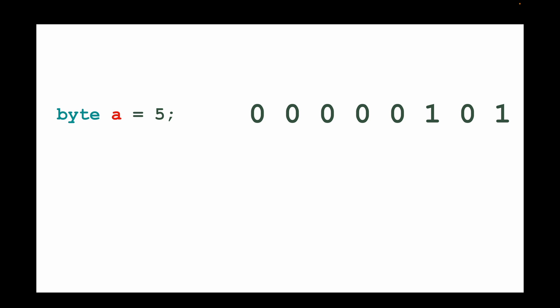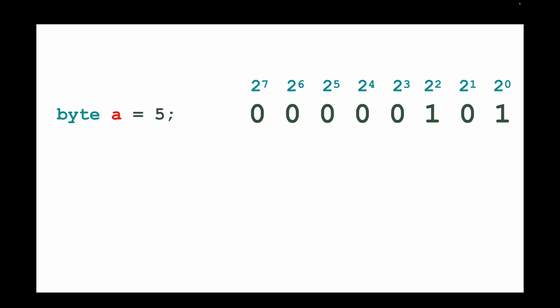You can store the number 5 like this: every digit represents a different power of two. It starts with 2 to the power of 0 (which is 1), 2 to the power of 1 (which is 2), 2 to the power of 2 (which is 4), and so on. You then add up these numbers: 4 plus 1 equals 5. This gives you a total range of 0 to 255 using exactly one byte.